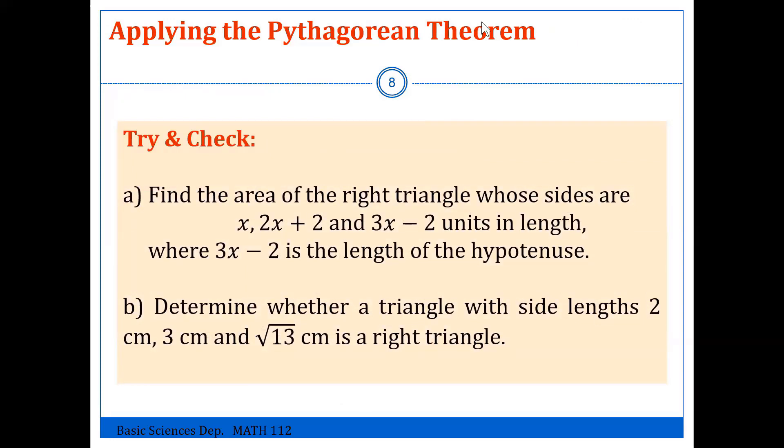For the try and check problem, we are asked to calculate the area of a right triangle. Both sides are—so this is the right triangle, this is the right angle, this is the hypotenuse. So here, what is the hypotenuse? The hypotenuse is 3x minus 2. So the two other sides are x and 2x plus 2.